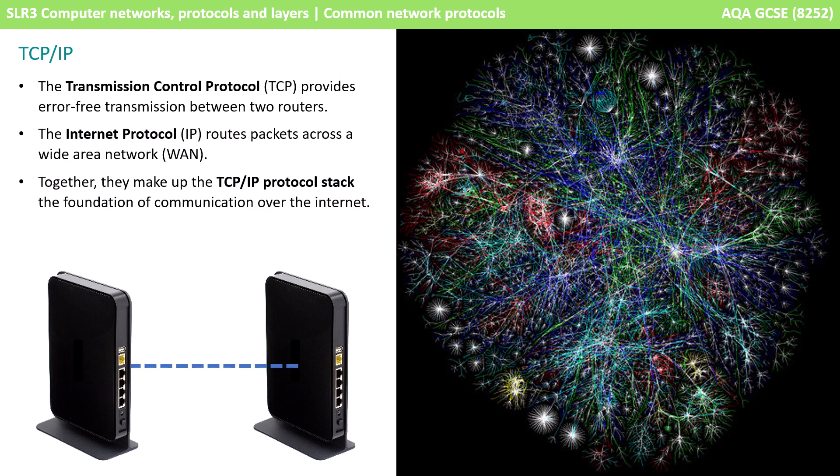So firstly, the TCP/IP protocol. The Transmission Control Protocol TCP provides error-free transmission between two routers, and the Internet Protocol IP routes packets across a wide area network. Together they make up the TCP/IP protocol stack, which is the foundation of how we communicate over the internet.